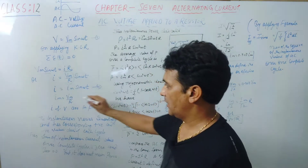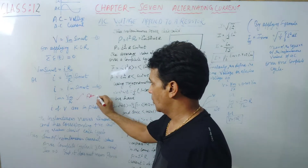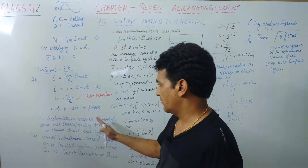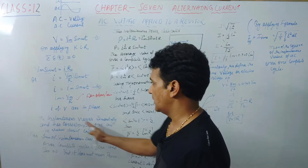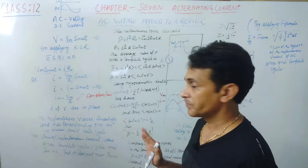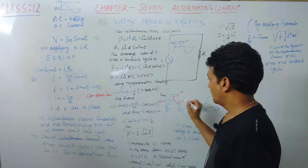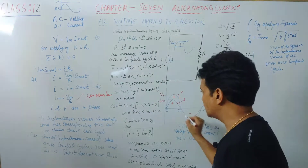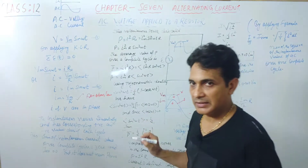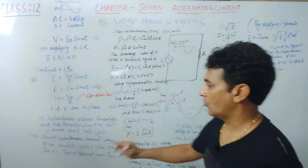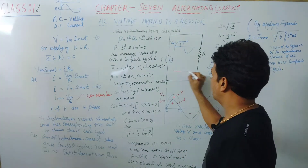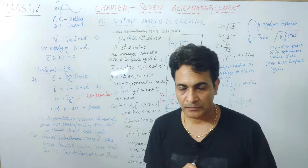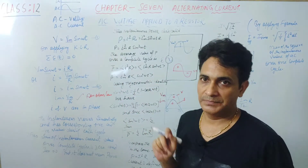The instantaneous current varies sinusoidally and has corresponding positive and negative values during each cycle. The voltage has positive values here and negative values there — similarly the current has positive and negative values. This means the instantaneous voltage or current varies sinusoidally. Over a complete cycle the average value is zero — meaning if voltage and current go positive once and negative once, the average value should be zero.